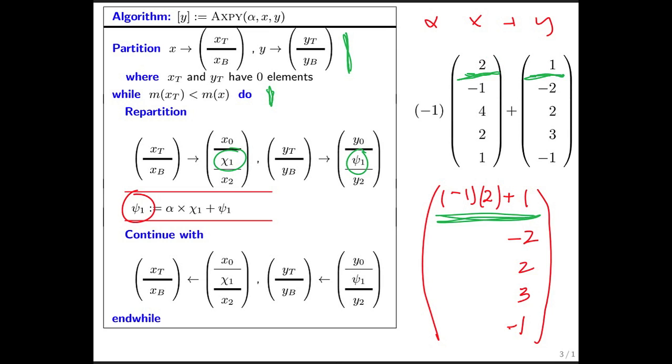At that point, we move the thick lines along and we go back to the top of the loop. We expose the next elements, we do the computation, and we move the computation along.